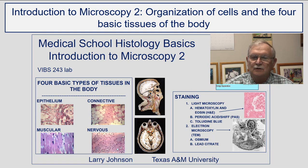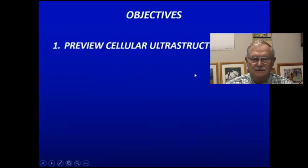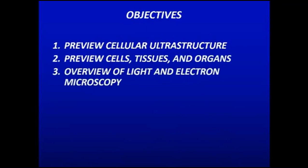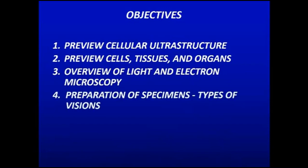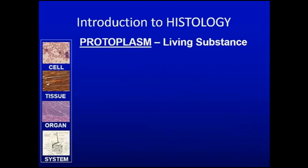We want to look at the organization of cells and the four basic types of tissue. We want to preview the cellular ultrastructure. We want to preview cells, tissues, and organs, overview of light electron microscopy, preparation of specimens for types of visions, and ultrastructure features of cells and organelles.